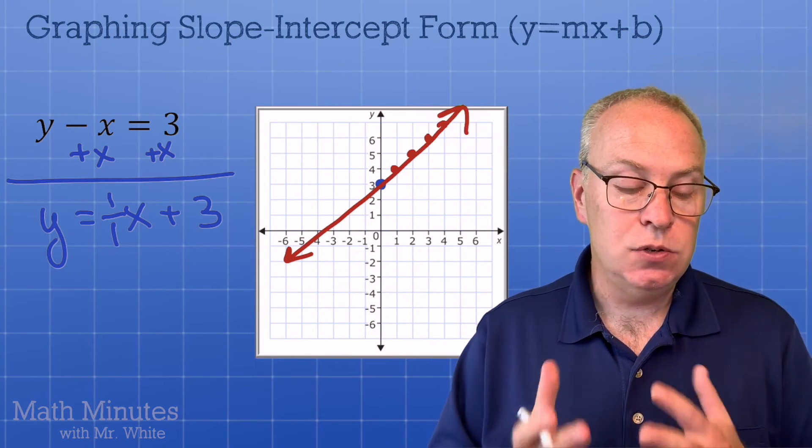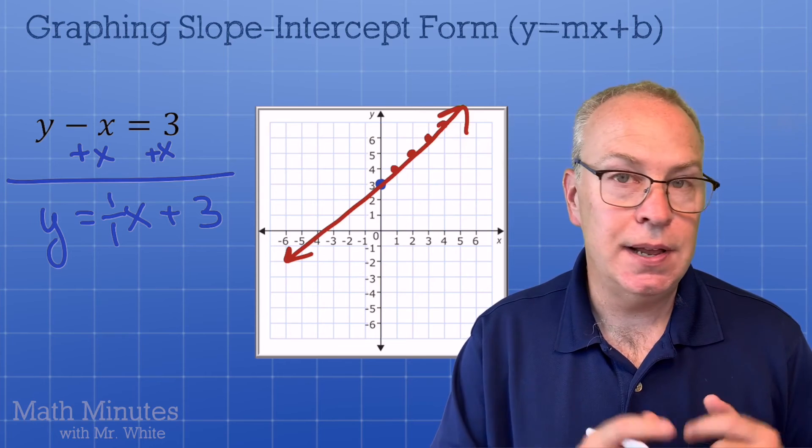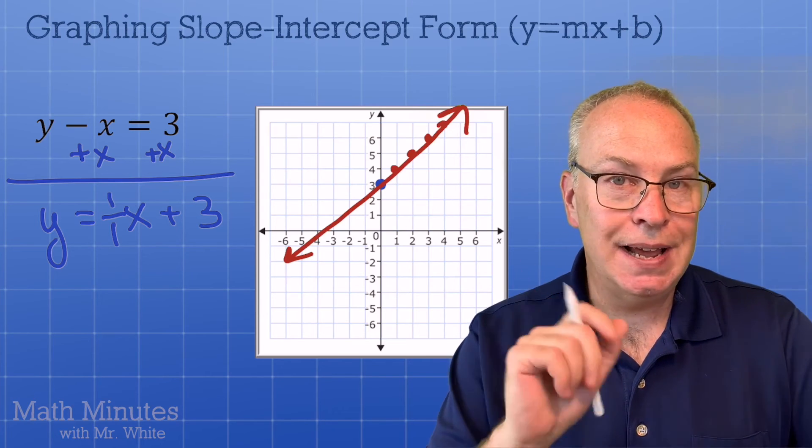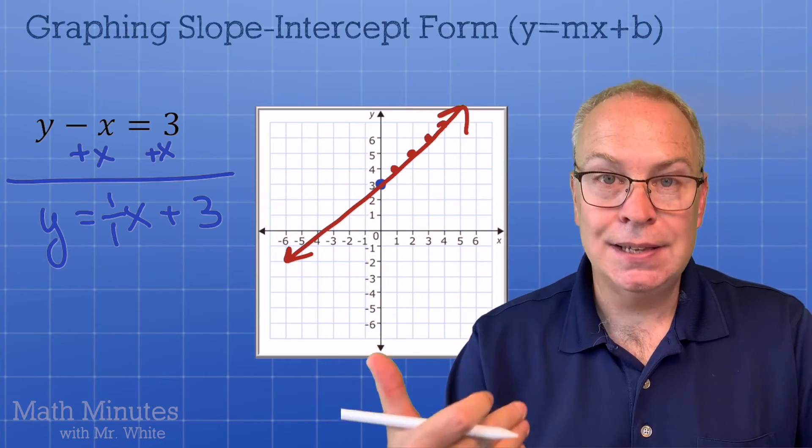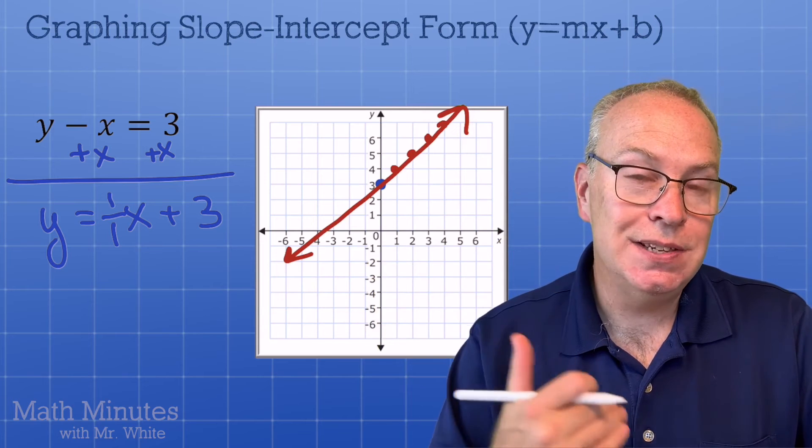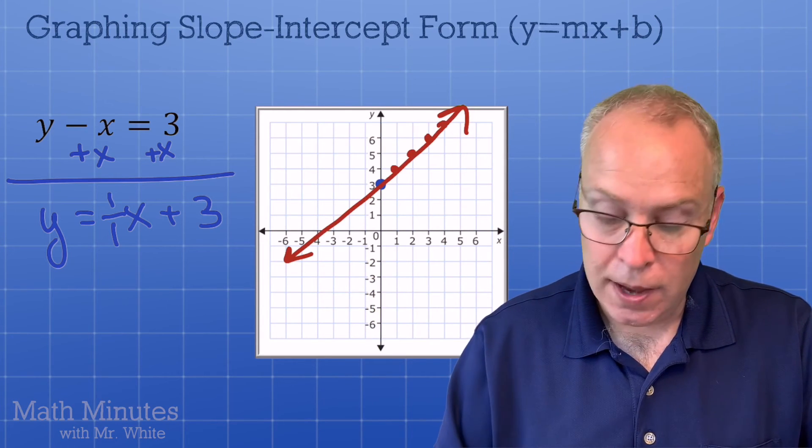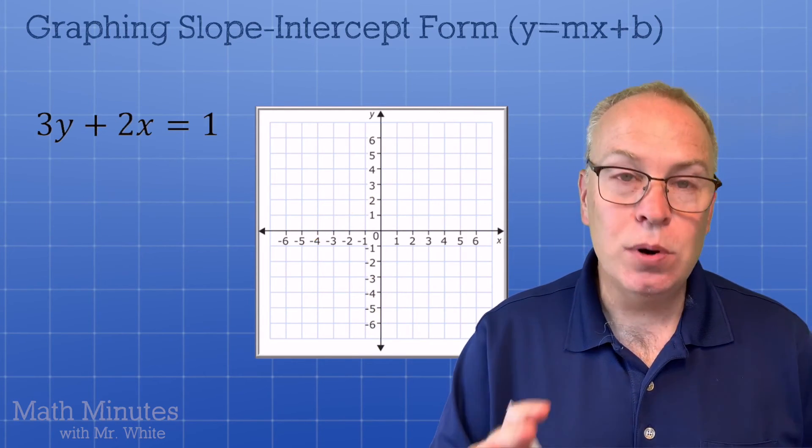Now, originally, it was given to us as y minus x equals three. That didn't make the slope negative. The slope is not negative one because we moved that x to the other side and we see this when it's in the proper form, the slope was one. Let's do one more problem, sort of similar.